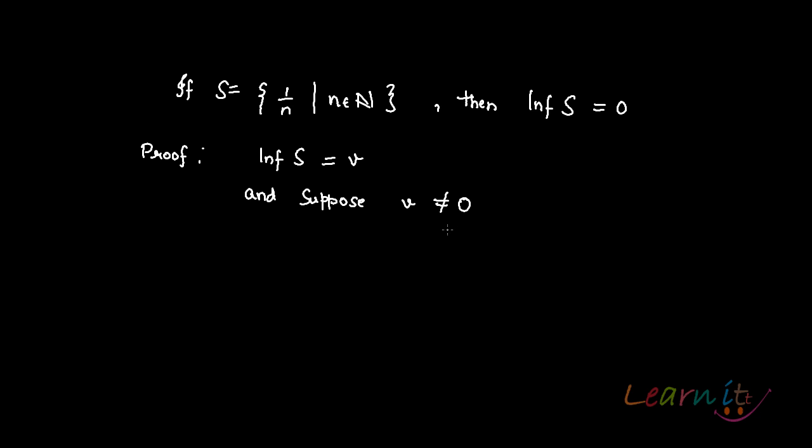So again we will be trying to contradict. So we will be trying to prove through contradiction. So as 0 is a lower bound for this set, 0 is a lower bound for S. So as 0 is a lower bound, so 0 should be less than or equal to v.